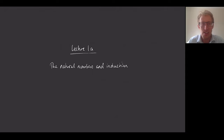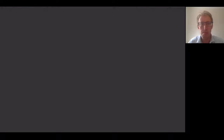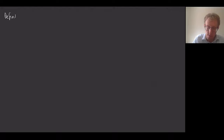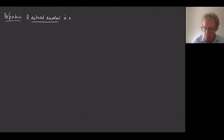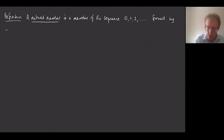We're going to start by talking about the natural numbers and then talk a bit about induction. The natural numbers are something you've probably come across before — these are the non-negative integers. There is a bit of ambiguity about whether to include zero or not, and I'm going to decide that we will include zero. So a natural number is a member of the sequence 0, 1, 2, and so on, formed by starting from zero and then successively adding one.